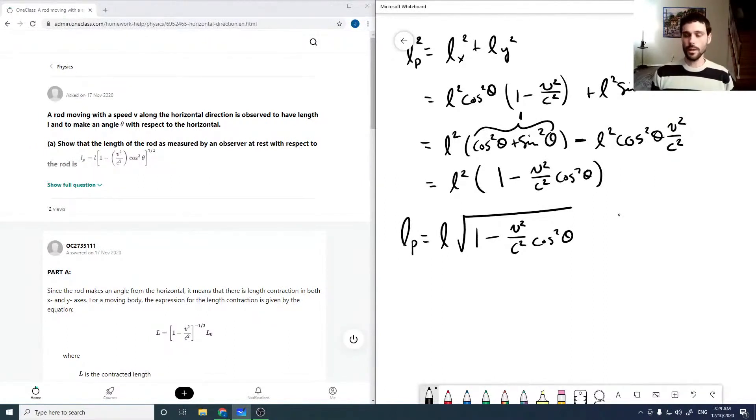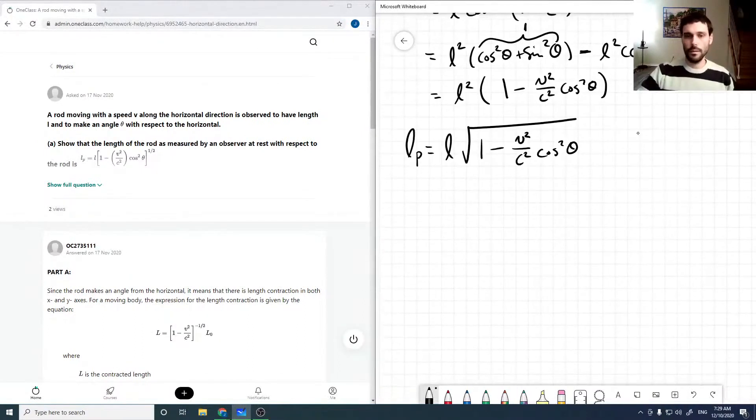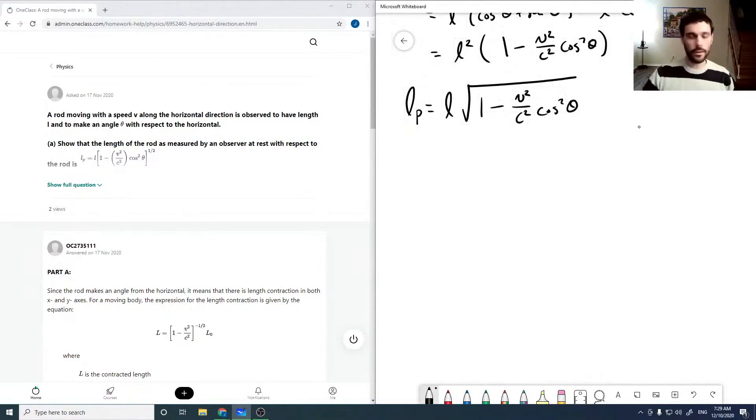And then it also wants us to find the new angle, and show that the angle is also being altered by the motion. And so if we look, our angle is LX, LY, and we've got a new, a theta P. And we've got an LX, and an LY.